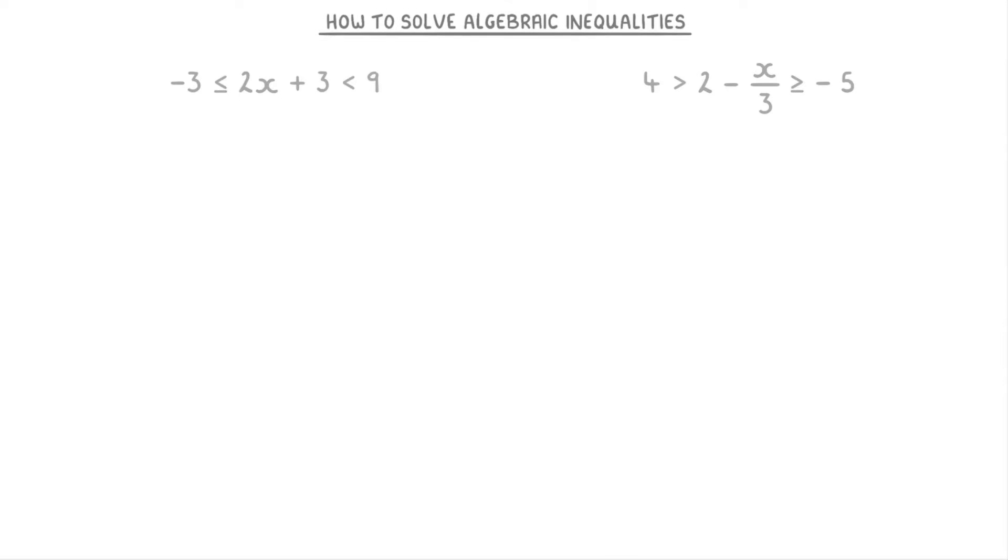In this video we're going to cover how to solve algebraic inequalities like these two, which involve two inequality signs. The idea with these is that you want to get the x in the middle entirely by itself, so it doesn't want to be being multiplied or added to anything. But importantly, whatever you do to the middle section, you also have to do to both of the sides.